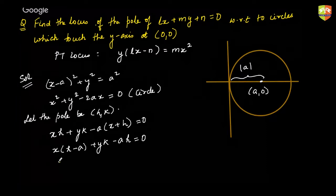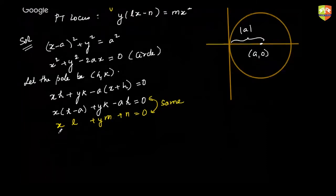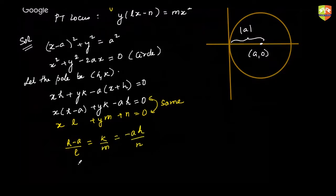If you simplify this, it will be x(h − a) + yk − ah = 0. Now we are claiming that this equation is the same as lx + my + n = 0. So these two are the same equations, and we can compare coefficients: (h − a)/l = k/m = −ah/n. I have to eliminate 'a' somehow, because 'a' is something I introduced.